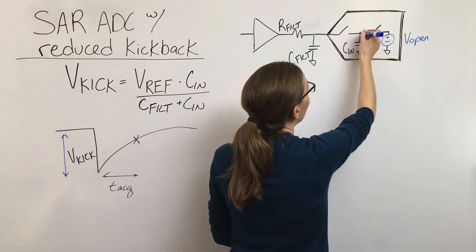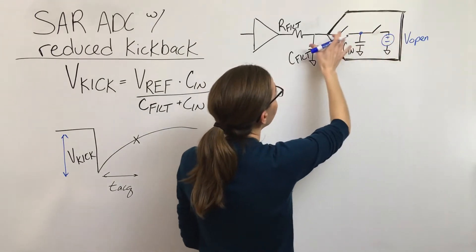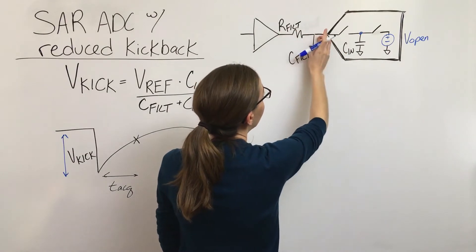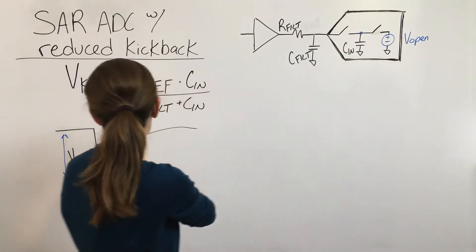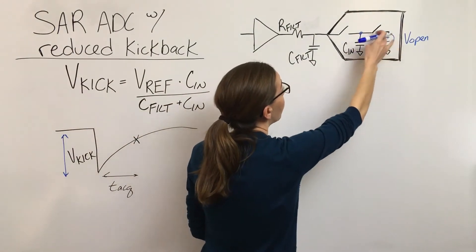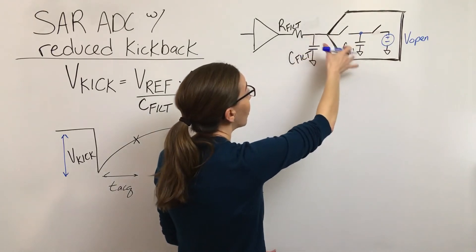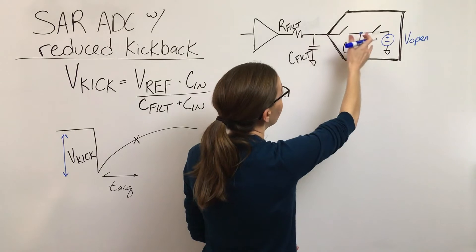And so the goal of this circuitry is to try to minimize the voltage difference between what's being driven here and what's here when the switch closes. When the switch closes is when this kick happens. And so the circuitry is trying to, instead of discharging to ground where you could have a pretty large voltage difference, it's trying to minimize what that voltage difference is.